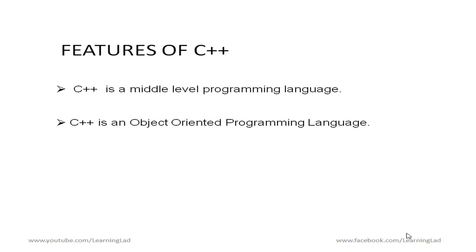In object-oriented programming we use objects and classes, and this approach uses concepts such as inheritance, polymorphism, encapsulation, and abstraction. If this is confusing or you don't understand what exactly I'm talking about, don't worry — while programming it's going to be very clear to you.